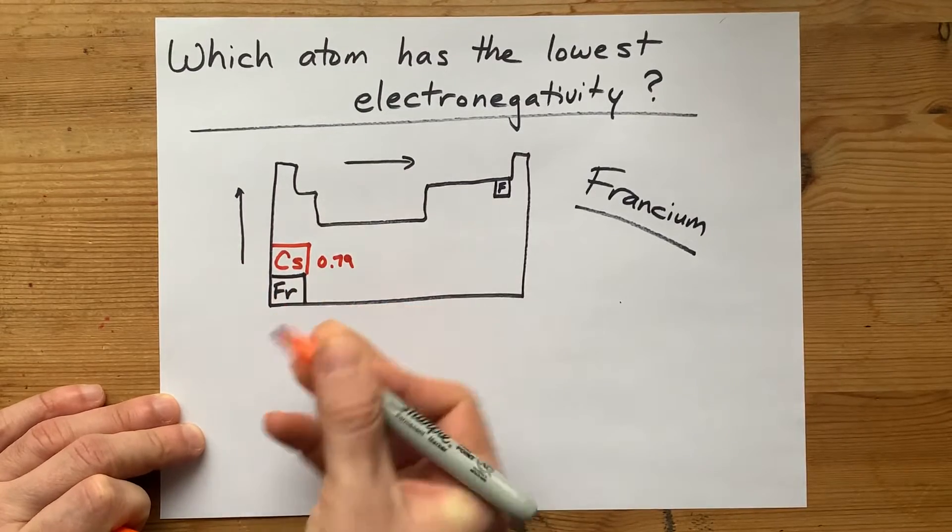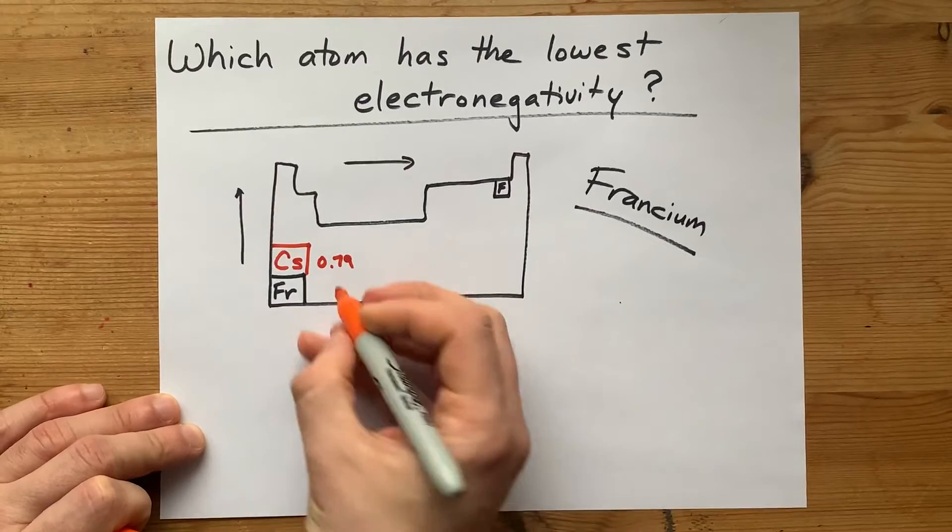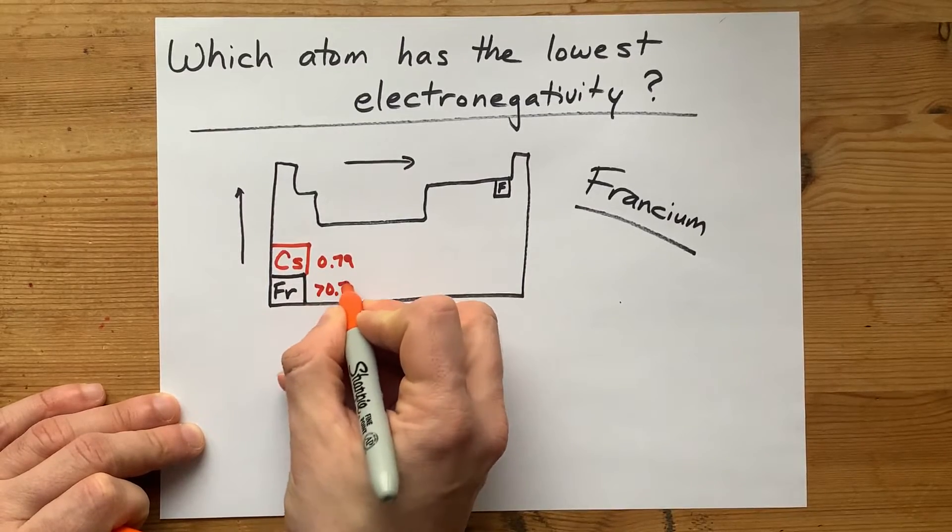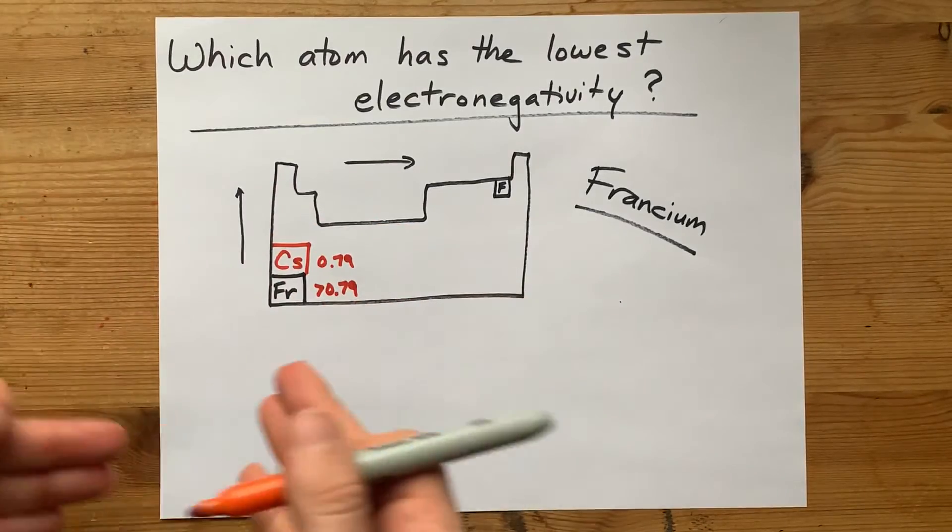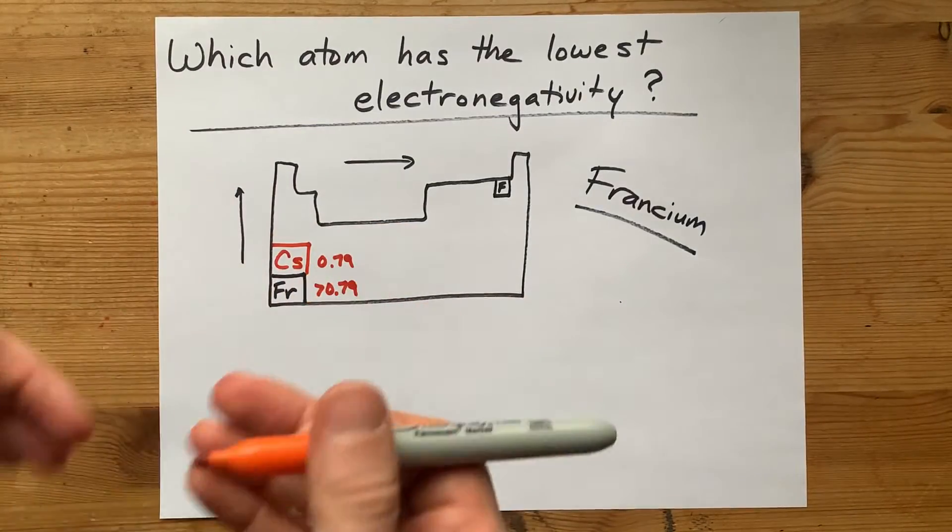And we don't know what the electronegativity of francium is going to be, but we guess that it's going to be more than 0.79 just because of where its ionization energy is relative to cesium.